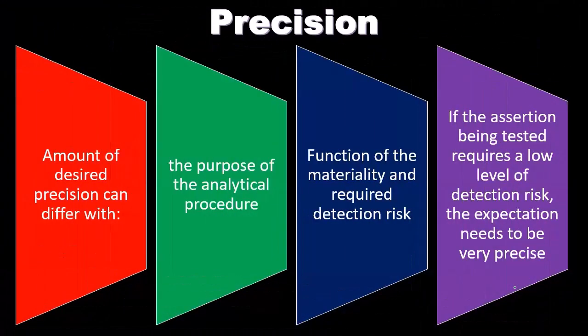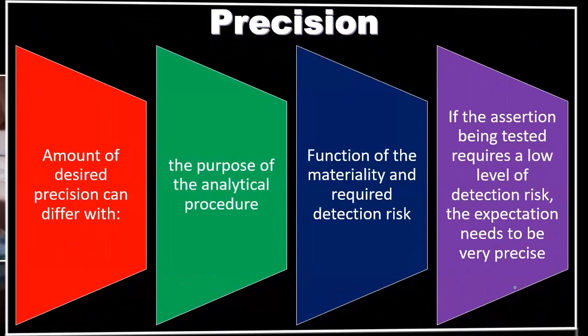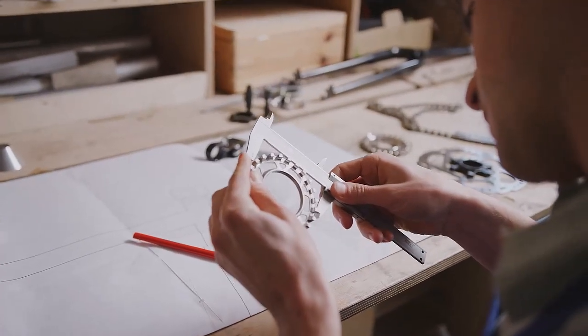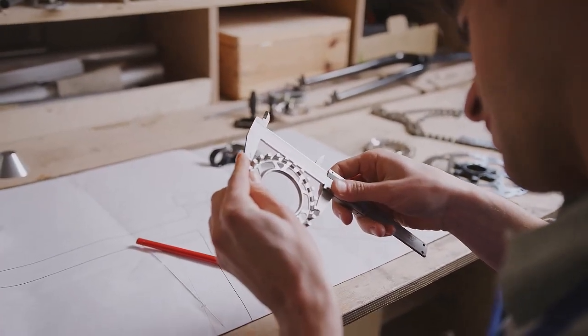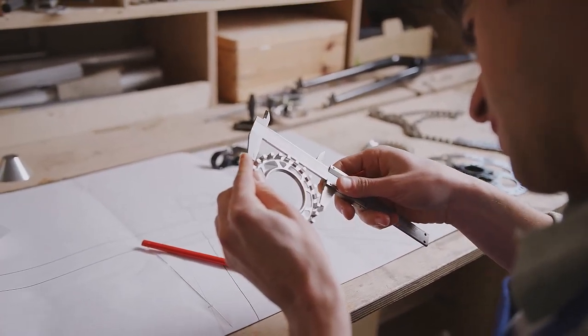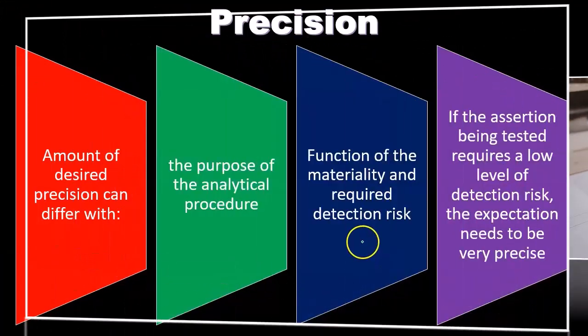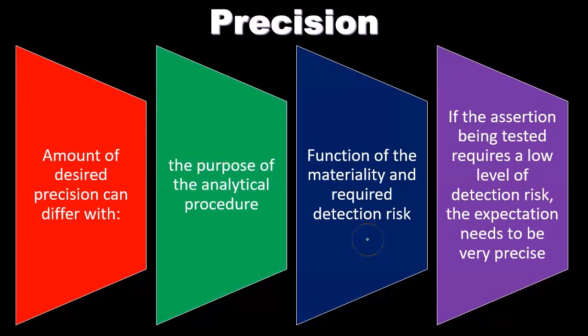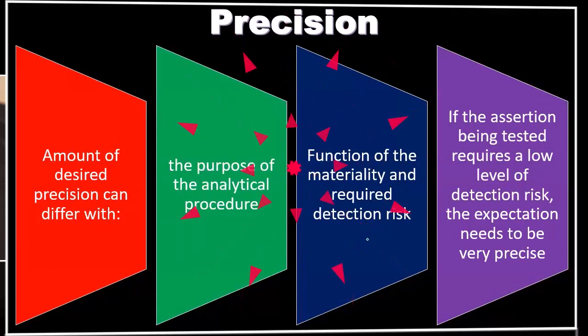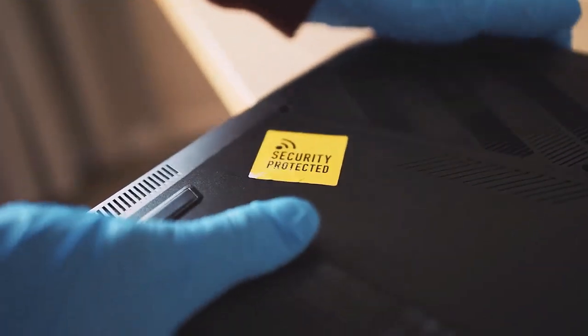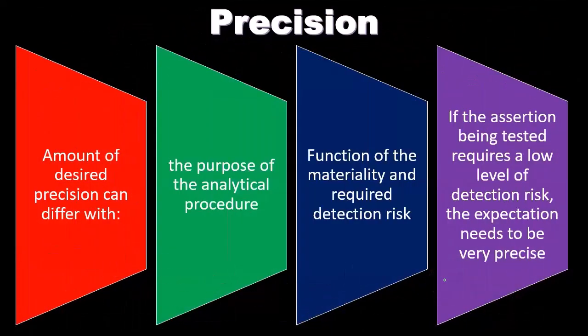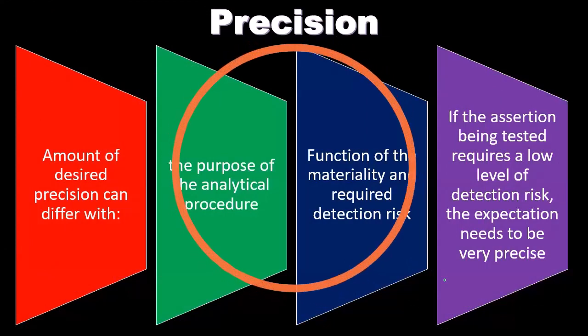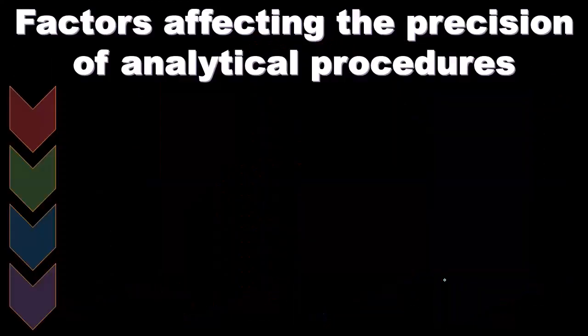If we're setting the detection risk to be low, that means we want a low level of risk that we won't be detecting the problem, and therefore we need more precision so that we would be more likely to catch the problem. It can be a little confusing when we think about these risk factors such as detection risk. If we want a low detection risk, we want a very precise test to make the risk that we don't detect something low.